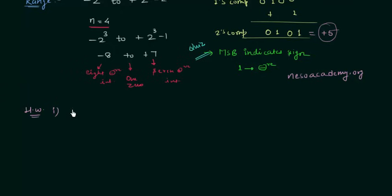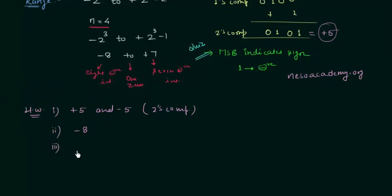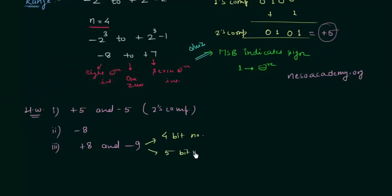In the first homework problem you have to represent plus 5 and minus 5 in two's complement. In the second problem, represent minus 8. In the third problem, represent plus 8 and minus 9 — try both for a 4-bit number and for a 5-bit number. Once you have your answer, post it in the comment section.